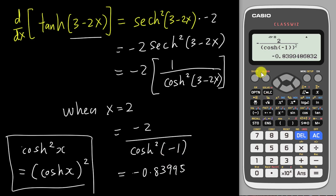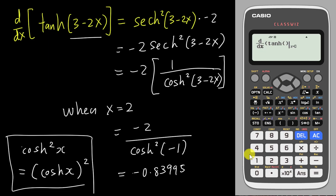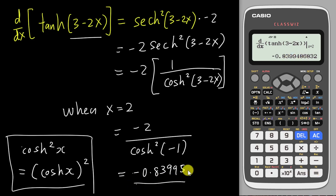To verify using the differentiation function, press shift integration sign, tell the calculator to differentiate hyperbolic tangent — choose number 3 — insert the angle (3 minus 2x), set x equal to 2. You'll get a syntax error because you need to close the bracket twice. Once corrected, you get exactly the same answer. This is how easy it is to use the calculator to differentiate hyperbolic functions.